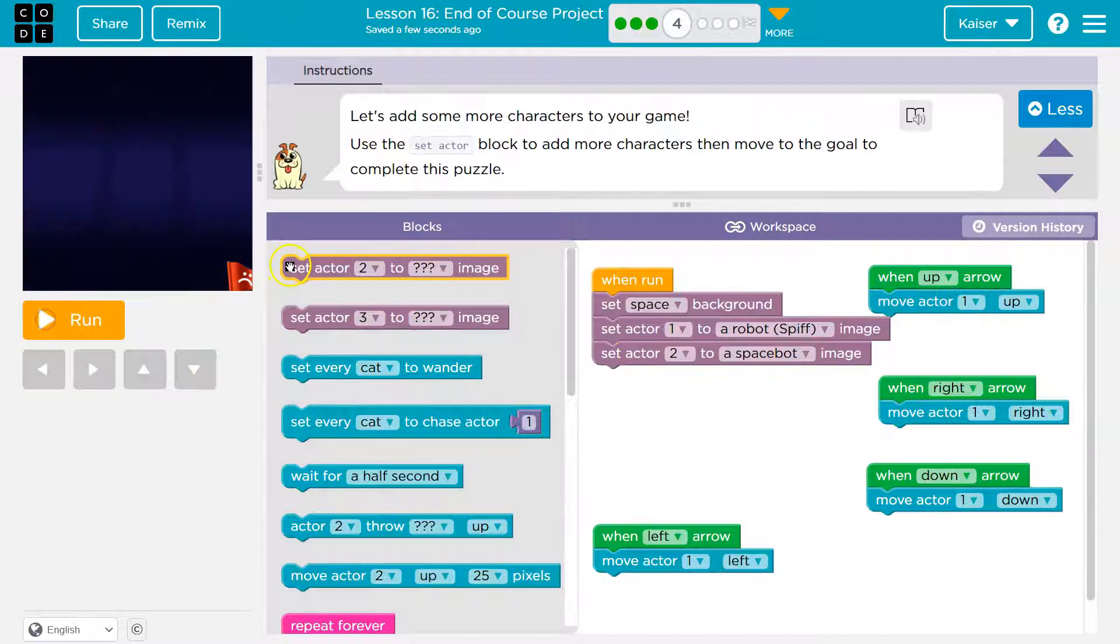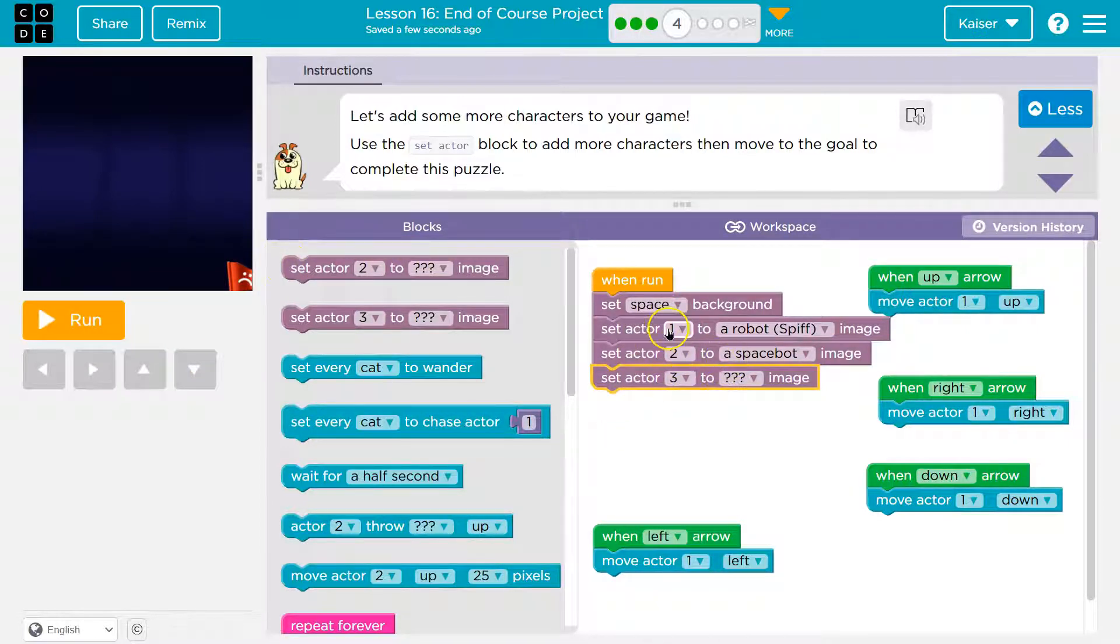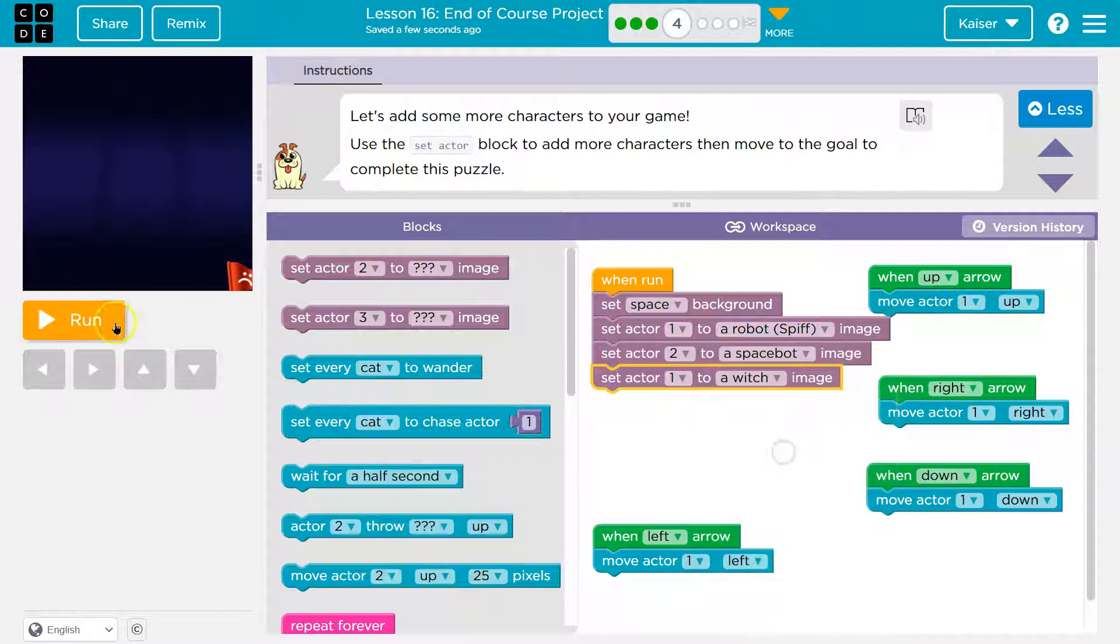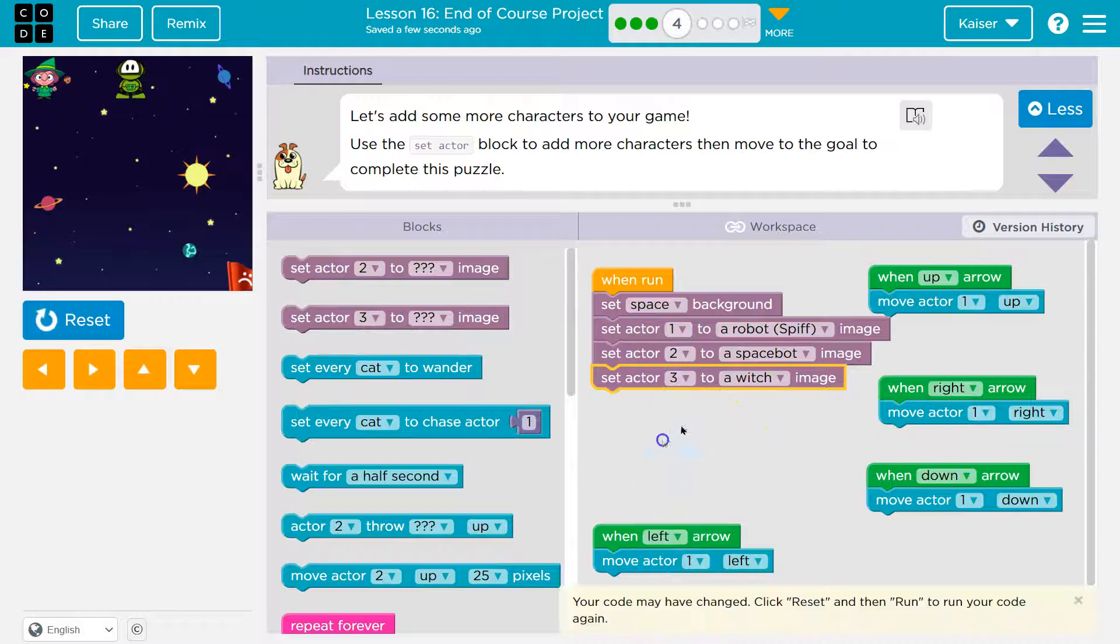You know what? And I will do one more. So set actor three. So notice how you want to make sure that you're picking the actor. So this is two, this is three. Because otherwise, if I set actor one to a witch, boom, it's never going to be a robot. Because I hit run, space background, it becomes a robot for a millisecond, but then it's written over by this set the witch.